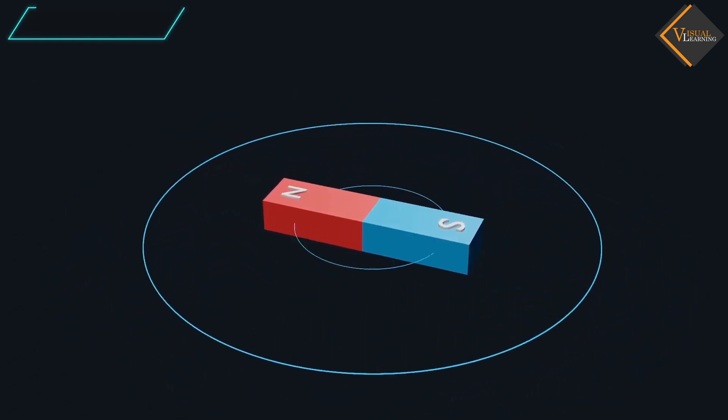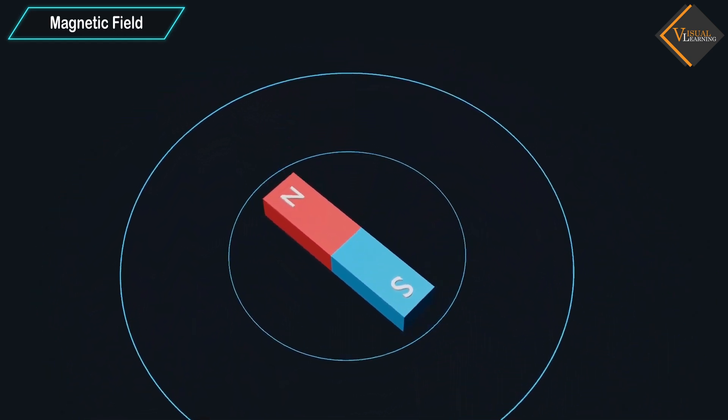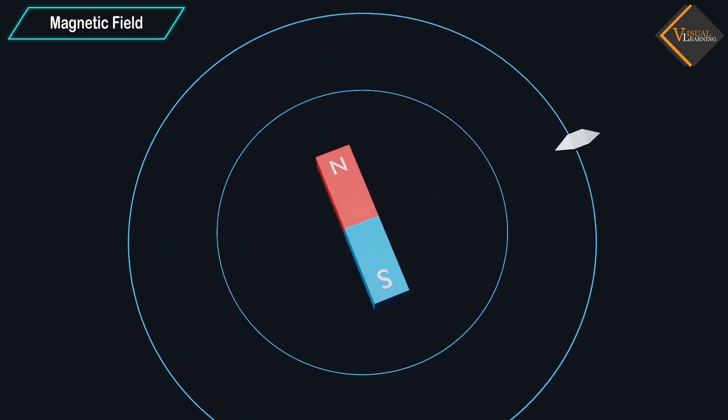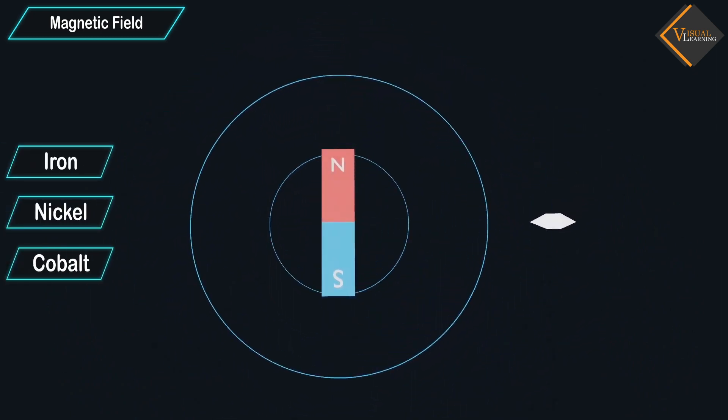Consider a bar magnet. Place a magnetic substance around it. Magnetic substance can be a piece of iron, nickel, or cobalt.